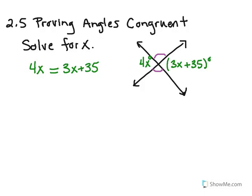So you don't have to overcomplicate this at all. If they're vertical angles, you can set them equal to each other, and you can solve for x. So when I solve this, let's go ahead and subtract 3x from both sides. And 4x minus 3x gives me 1x. And these cancelled, and then I have 35. So that is my answer.